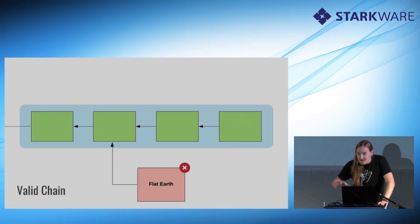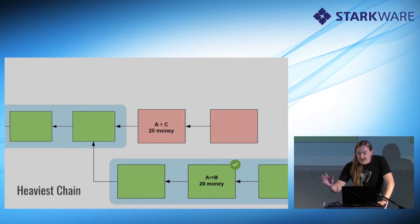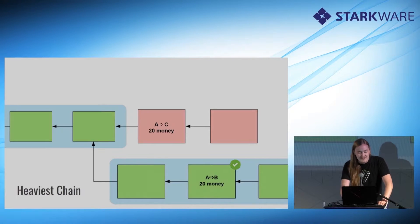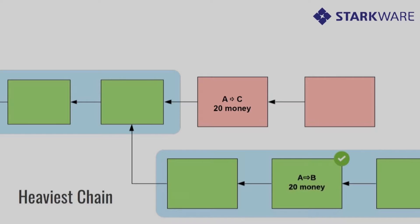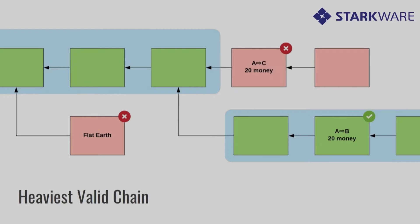We follow valid chains only. If you say stupid things, they don't get into the chain — that entire block becomes invalid. We follow the heaviest chain in proof-of-work. In proof-of-stake we use other fork choice rules, but in proof-of-work, if there's any conflict between two observed histories, we follow the one with more work put into it. This resolves conflicts, so we follow the heaviest valid chain, and that determines what actually happened.